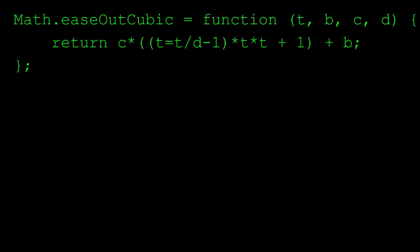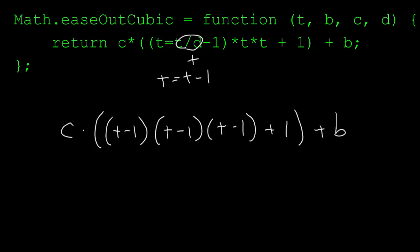The ease-out cubic formula gets a little bit more complex. First, we divide t by d to make t a normalized value. But then we're saying t equals t minus 1. So if t equals t minus 1, this turns the whole formula into c times t minus 1 times t minus 1 times t minus 1 plus 1 plus b. I won't go through all the steps of the multiplication here. But if you do them, you'll wind up with this formula.